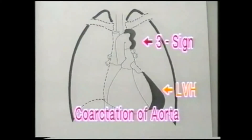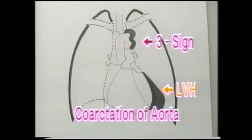In coarctation of aorta, the left border of the aortic knuckle and descending aorta may show the classic 3 sign if the coarctation is situated on the descending part of the arc of aorta. It is the site of coarctation itself with pre- and post-stenotic dilatations above and below.